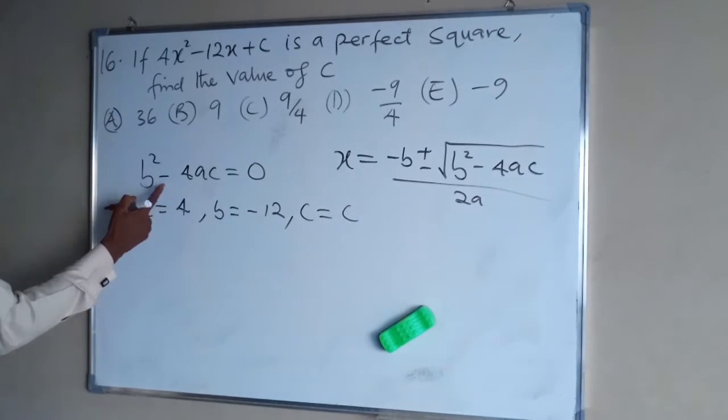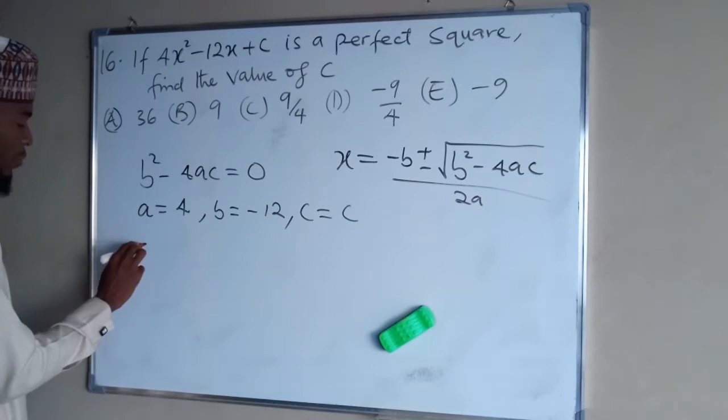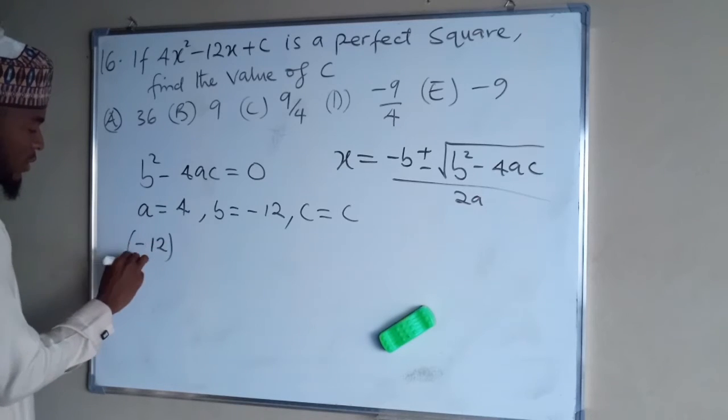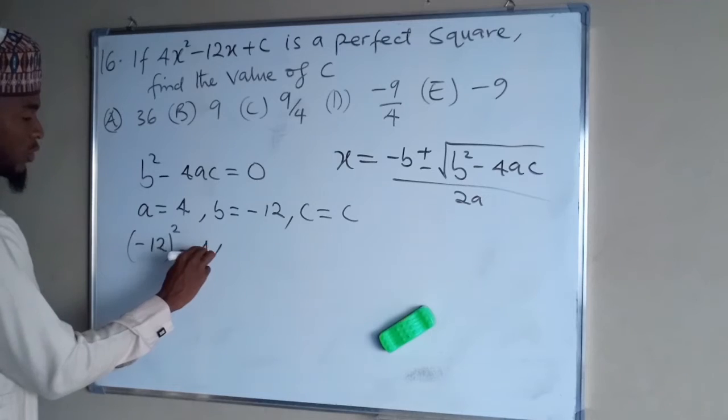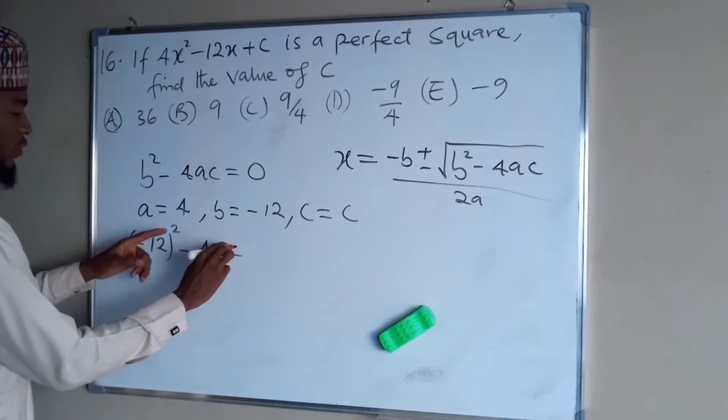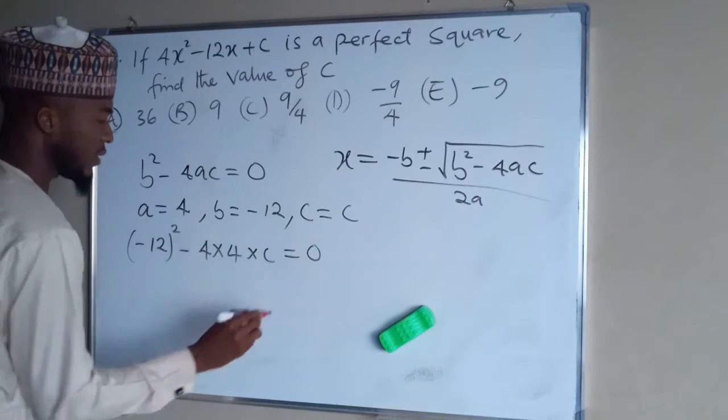So we are going to substitute into this formula. We start with B squared, minus 12 squared, minus 4 multiplied by A, which is 4 also, then times C equals zero.